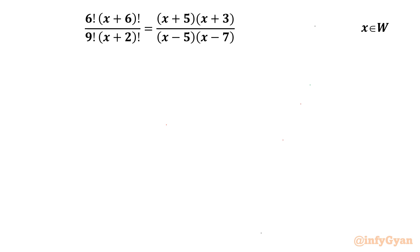Welcome to InfiGyarn friends. In this video we are going to take up one very interesting and challenging question from factorial equations. Our equation is 6 factorial times (x + 6) factorial over 9 factorial times (x + 2) factorial, equal to (x+5)(x+3) over (x−5)(x−7), where x belongs to whole numbers. I will demonstrate two different methods to solve this problem.